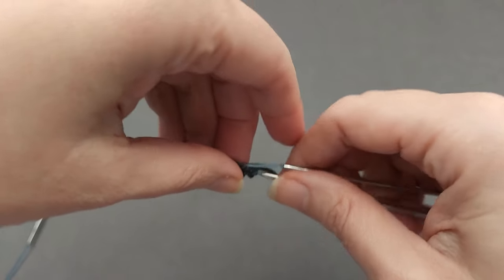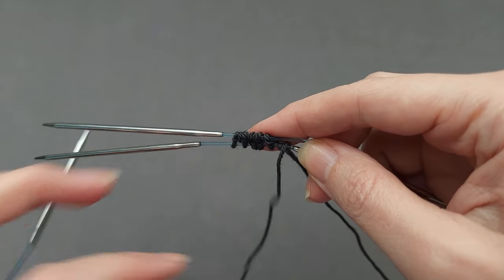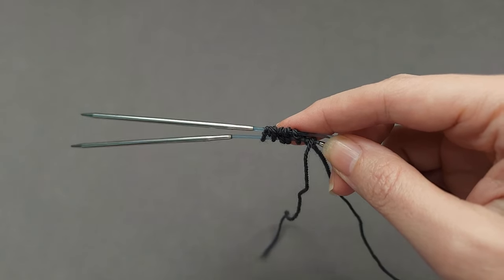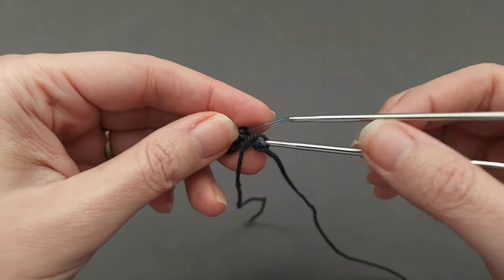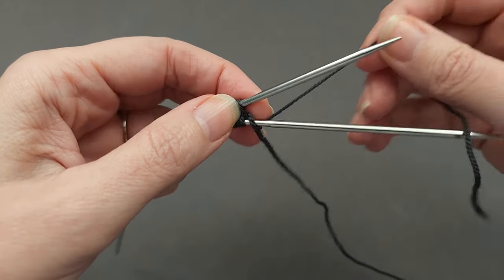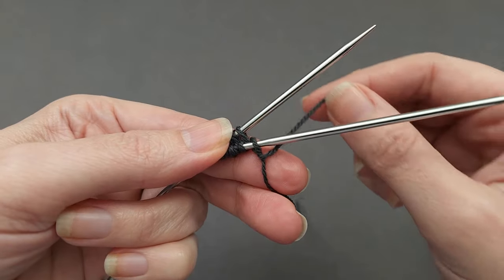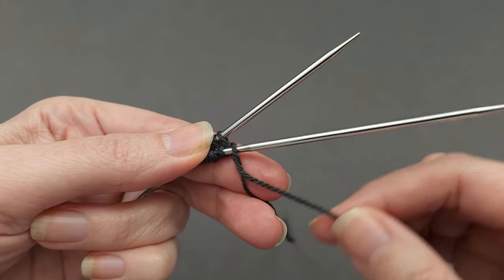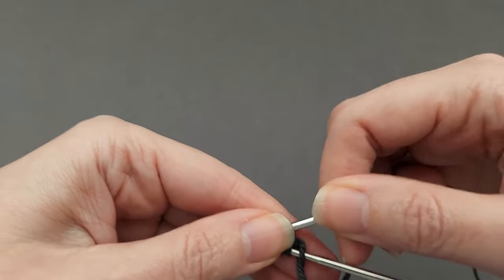We'll rotate so we can work the second half of the round. Again, this tail is still at the front. As we begin this second half of the round, we can move that tail to the back, just being careful that as we work the first stitch, we want the working yarn to come around the tail to anchor it in place.